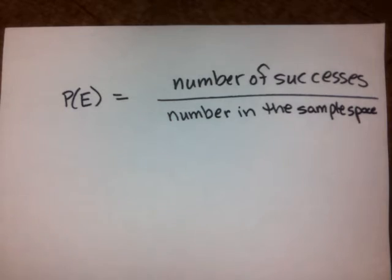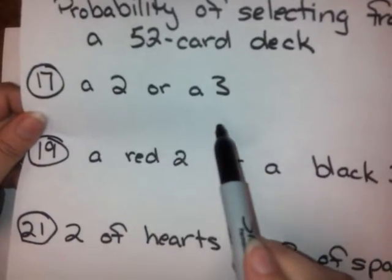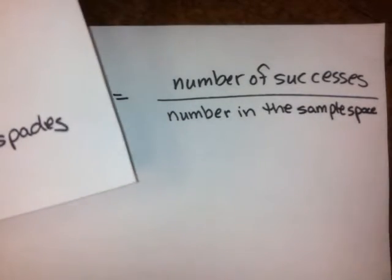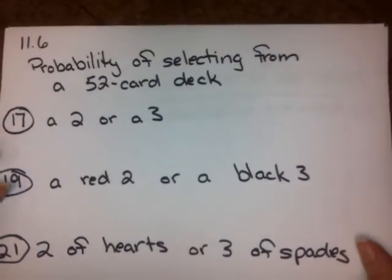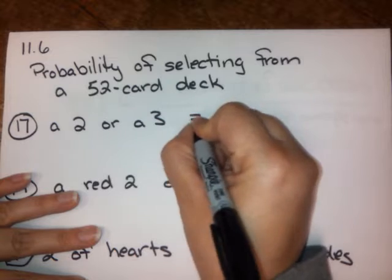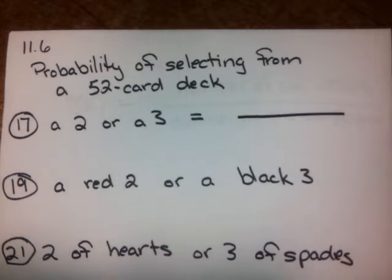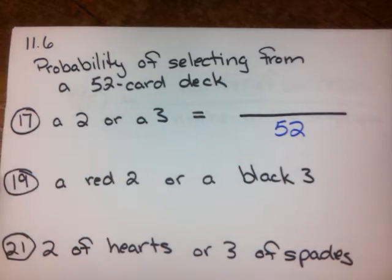So when we're talking about the probability of selecting things from a deck of cards, the number of successes are the number of ways to draw a 2 or a 3, and the sample space is that full deck of cards, so 52. So in this case, we're looking for something equals, and we know that 52 is going to be on the bottom because that's our sample space.